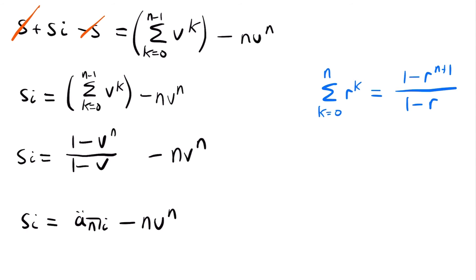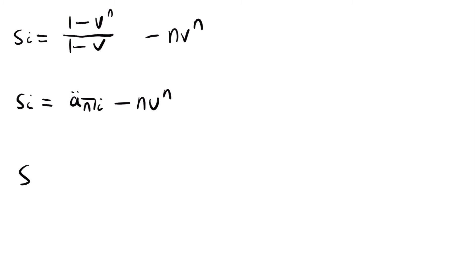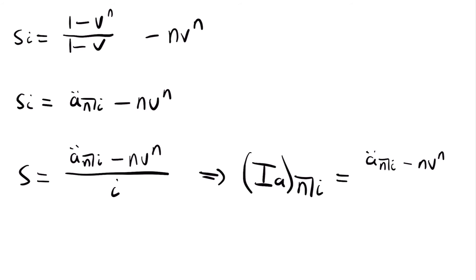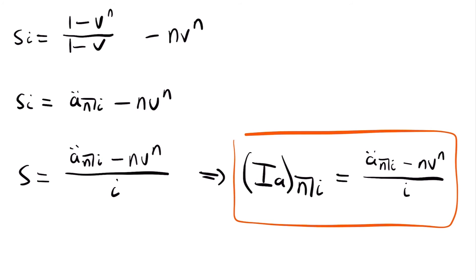We only have one more step: to solve for s, the present value of an arithmetic increasing annuity, we divide both sides by i. So s equals ä angle n at i, minus n times v to the power of n, all divided by i. Replacing s with our original notation, we have (IA) angle n at i equals ä angle n at i minus n times v to the power of n, all divided by i. This is the present value formula for an arithmetic increasing annuity — we've found the closed form.